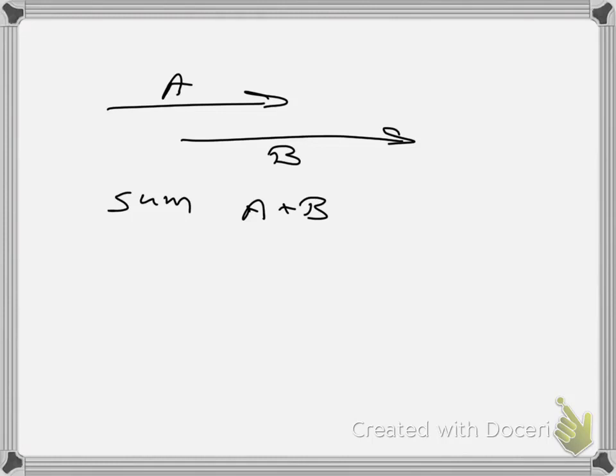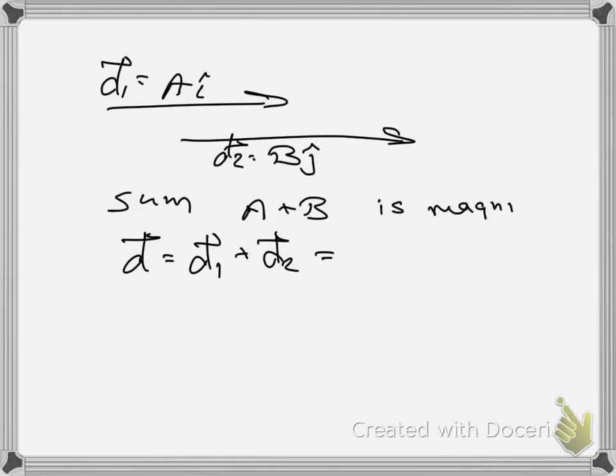Remember, what I just drew were magnitudes. If I wanted to draw a vector, let's say that this is vector D1, which has a magnitude of A in the I direction, and vector D2, which has a magnitude of B in the J direction. The sum of the magnitudes is A plus B, and that's going to be the magnitude of the sum vector. Oh, you caught the mistake, right? I did it again. This vector D2 is still in the X direction. It's not in the Y direction.